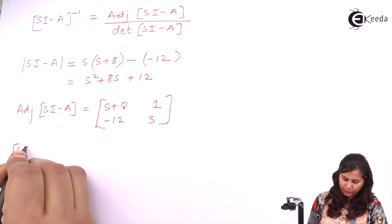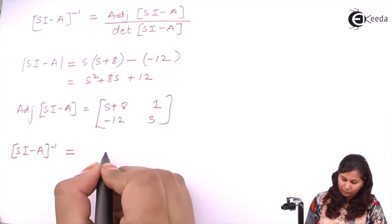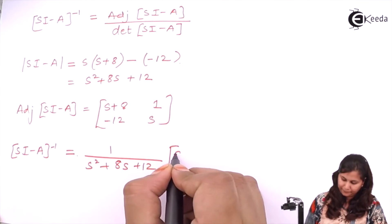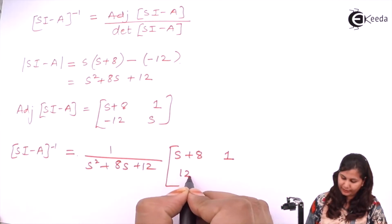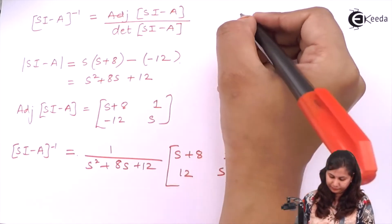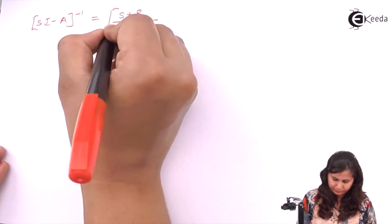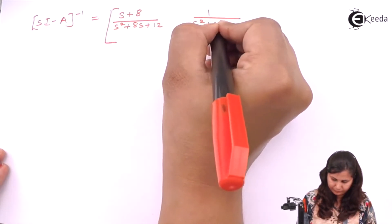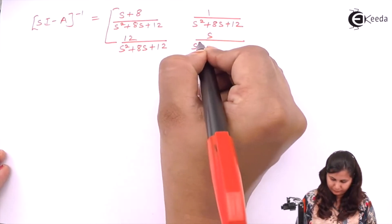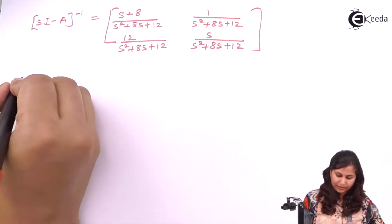So now we can calculate the inverse. (sI minus A) inverse equals 1 over (s² + 8s + 12), multiplied by the adjoint matrix [s+8, 1, -12, s]. This is the value of the inverse.